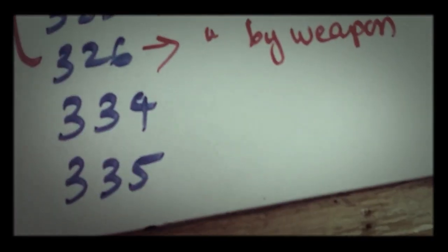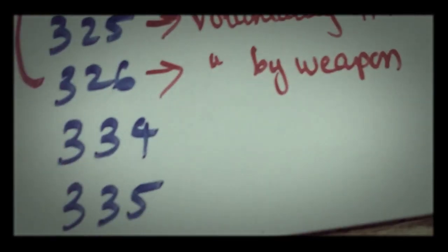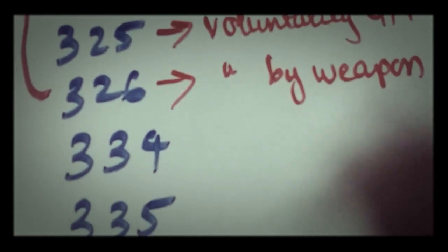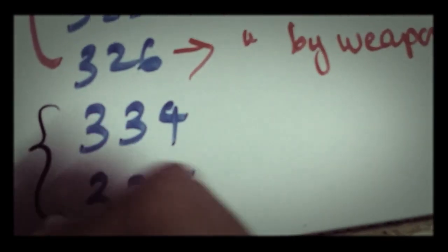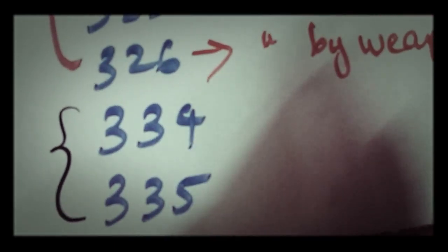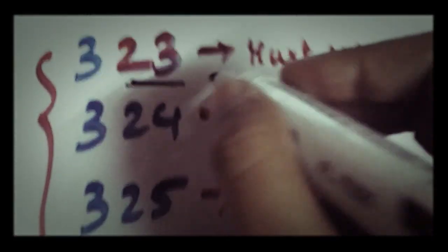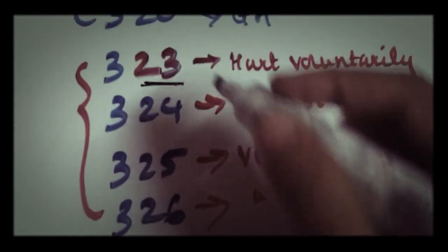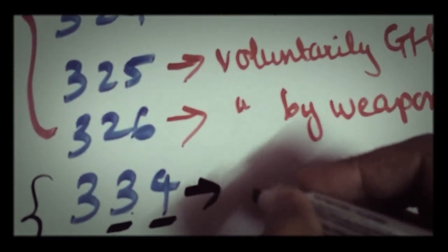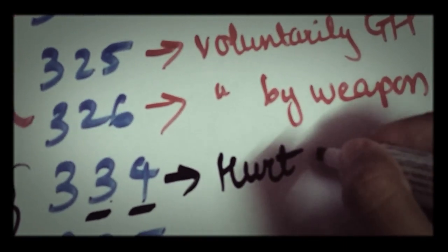And well, this one's pretty hard to remember as well. The 334 and 335 is basically causing hurt and grievous hurt with provocation. How I would remember these two numbers is that we would go back to what was the IPC for hurt voluntarily. So that is 323, right? So if you add one to 23 for each of the digits, it would come to 334, because 2 plus 1 is 3 and 3 plus 1 is 4.